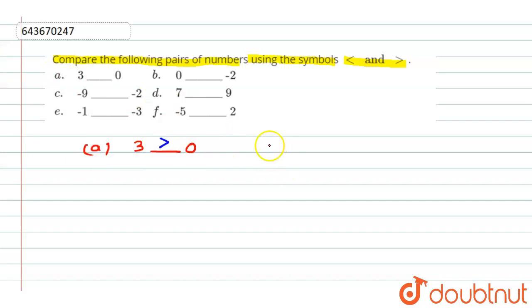Now question number B: 0 blank minus 2. As we all know that in the left side of 0, negatives are present. 0 is greater than negative sign but less than positive sign, so here greater than minus 2.